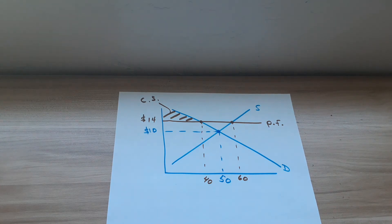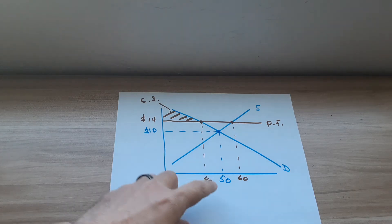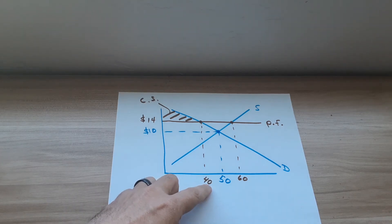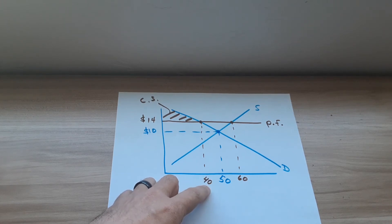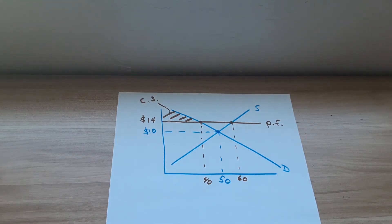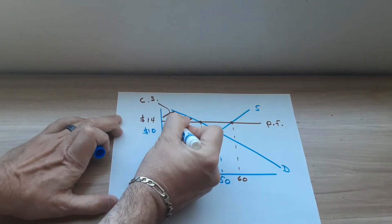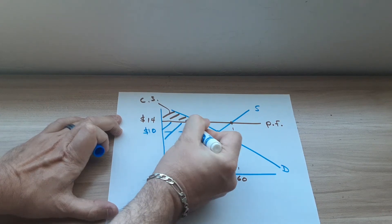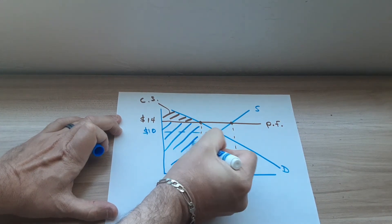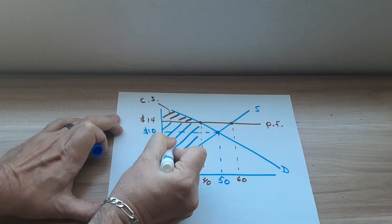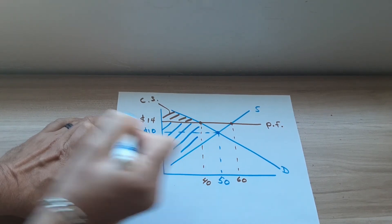Producer surplus is above the supply curve but below the price. But you have to stay within the quantity. There are 40 units being demanded by the consumer, so we want to stay within that quantity. So above the supply curve but below the new price of $14 — I'm going to line this area in blue. All this area here is your area of producer surplus.